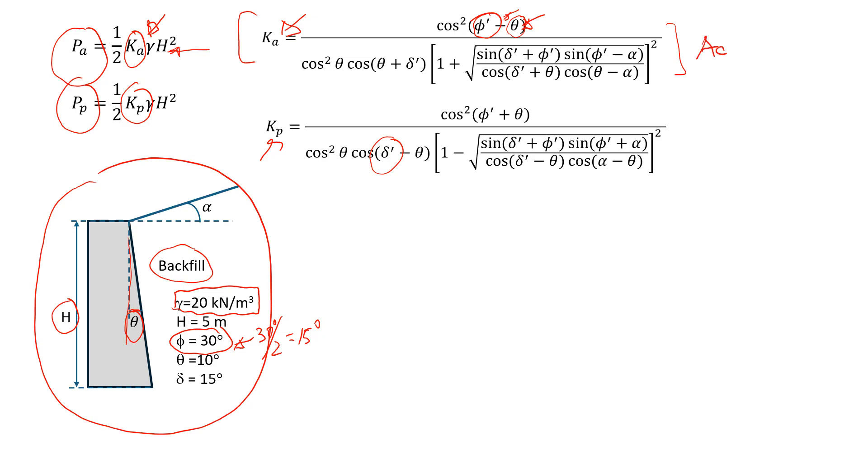Let's start with the active pressure. So I'm going to write down here, active pressure. Here we're going to have cosine squared. Friction angle, it's 30 minus theta, that is 10 degrees. So it's all in degrees. And then divided by cosine squared of 10 degrees.